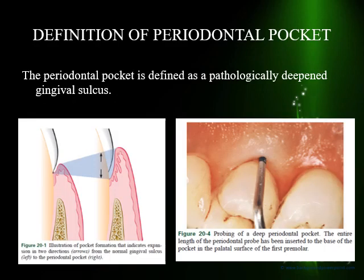The definition of a periodontal pocket is a pathologically deepened gingival sulcus. The gingival sulcus is a dynamic space — the crest of the gingiva can move in the coronal direction, and the base of the sulcus can move in the apical direction, meaning this pocket can deepen from both sides. It is not that one part is fixed. Compare this to loss of attachment, which is always measured from one fixed point — the cementoenamel junction.